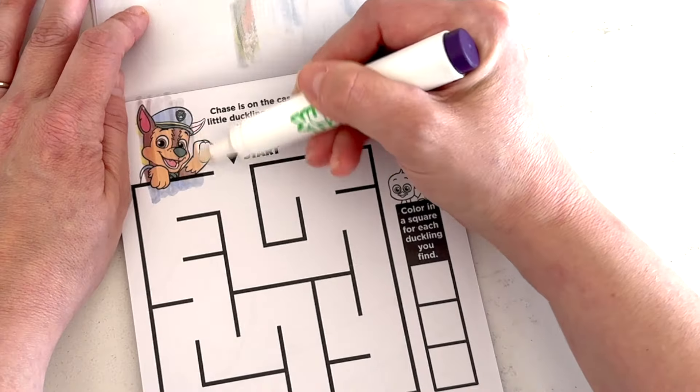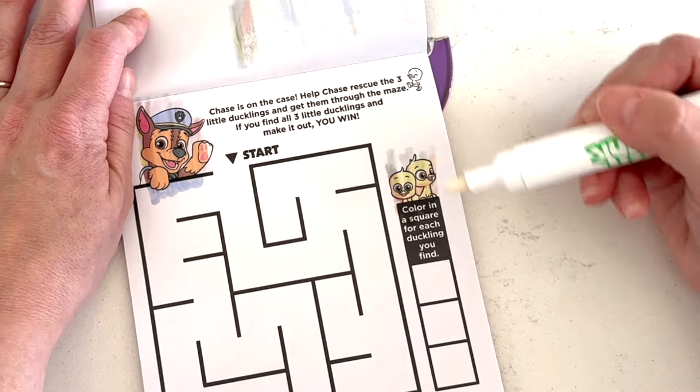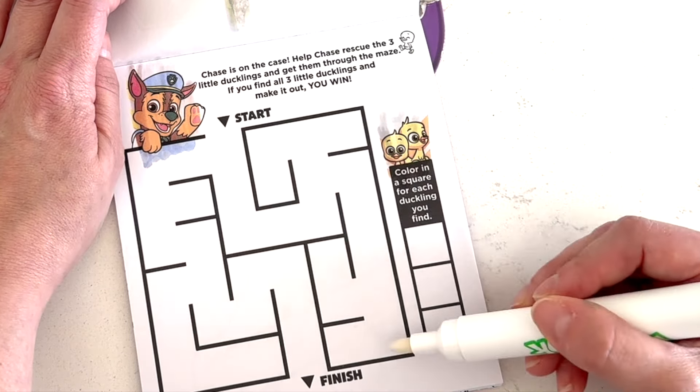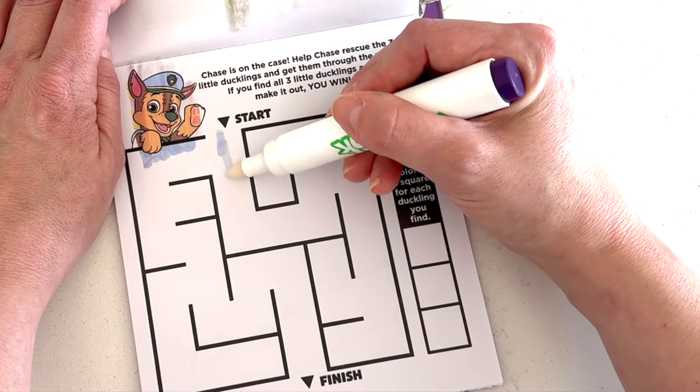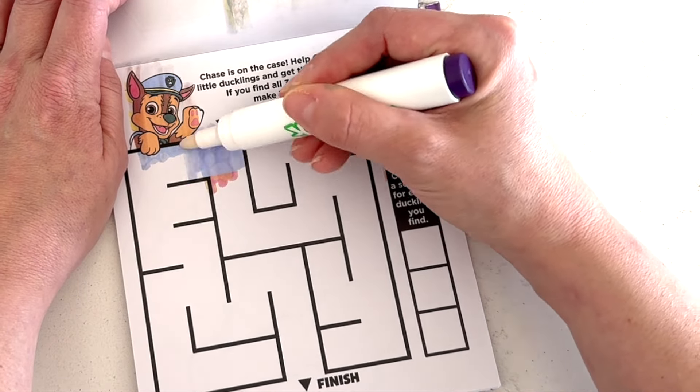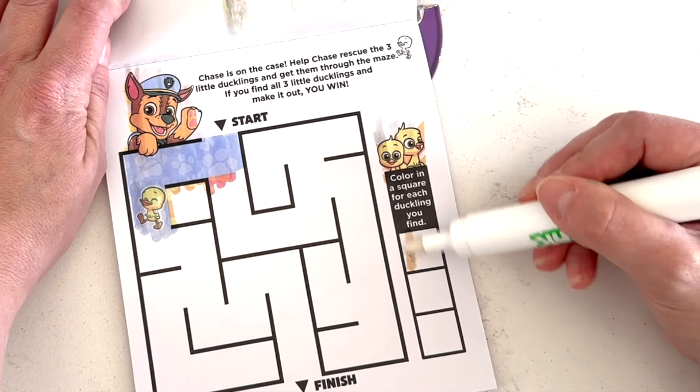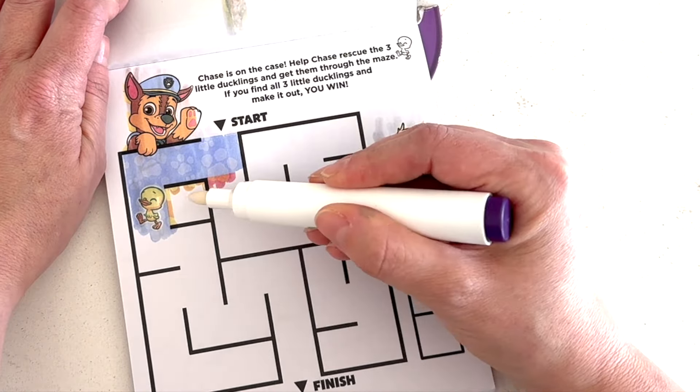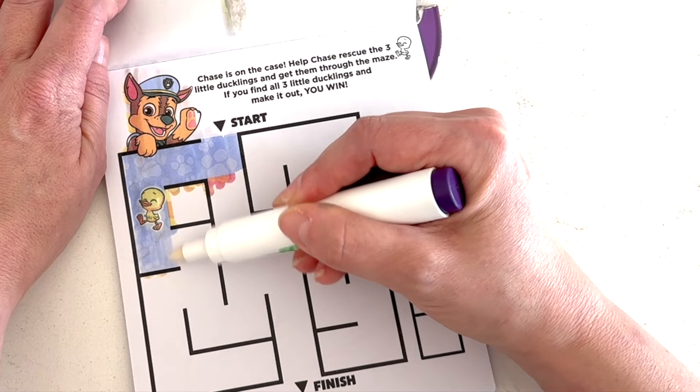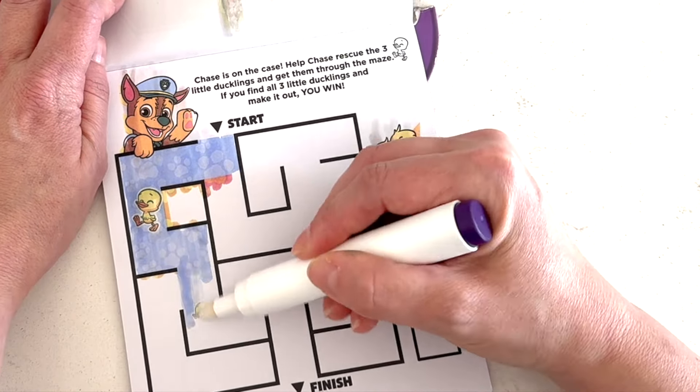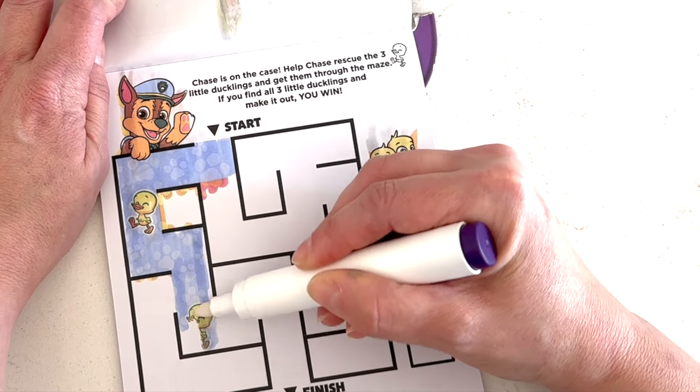Chase is on the case. Help Chase rescue the three little ducklings and get them through the maze. If you find all three little ducklings and make it out, you win. Uh oh. There we go. And then we have to color in a square for each duckling we find. So if we go this way, it's a dead end. So let's start going this way.